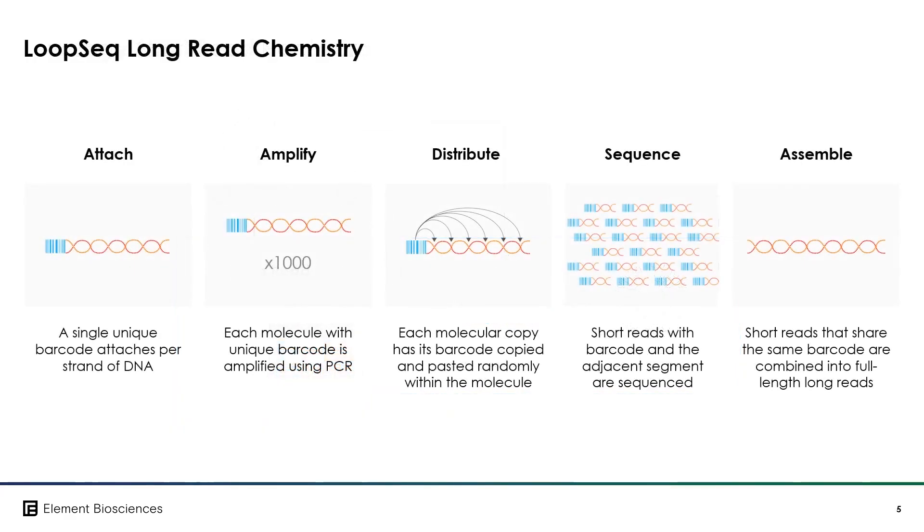There are five steps to the LoopSeq chemistry. The first step is called Attach, where a UMI is added to each long DNA molecule. The second step is Amplify, wherein long-range PCR is used to make multiple copies of each UMI barcoded molecule.